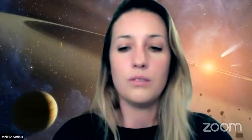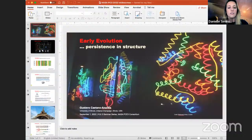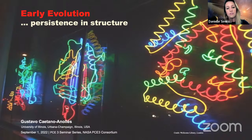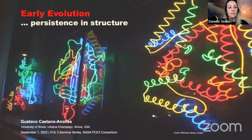We will start with a talk from Gustavo Catano-Anoles, who will present a brief topical overview of early evolution. Gustavo is a professor of bioinformatics at the University of Illinois and an expert in computational biology and evolutionary and comparative genomics. His current interests focus on the origin and evolution of the structure of biological molecules, chemistries, networks, and functions of synthetic biology. He is using his expertise in bioinformatics and biochemistry to compute the origin of life and the genetic code.